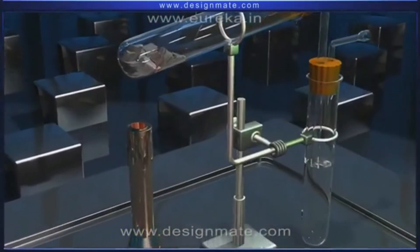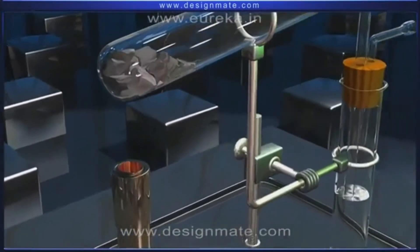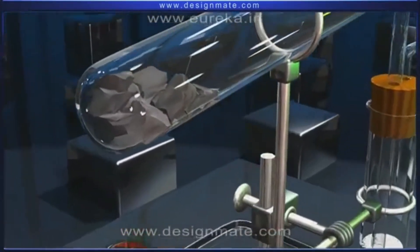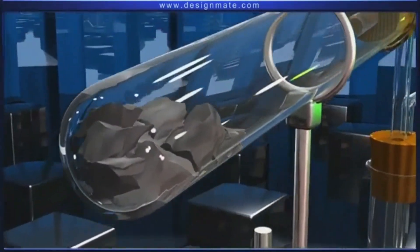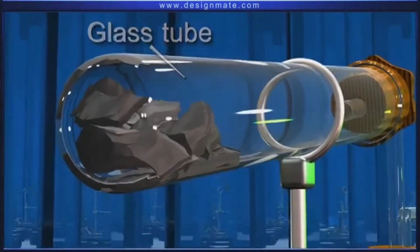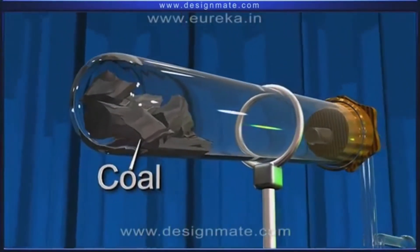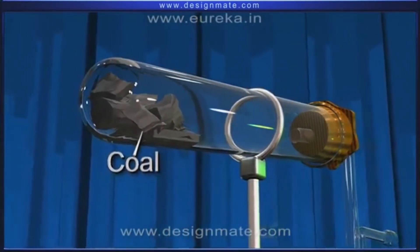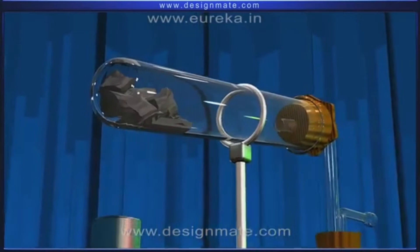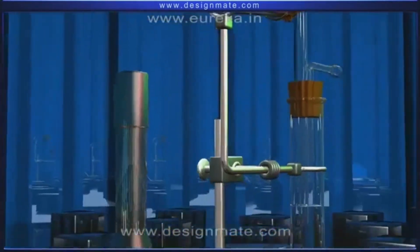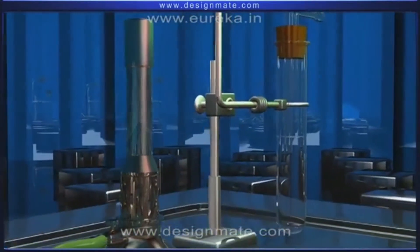First, arrange the apparatus as shown. The horizontal glass tube contains some small pieces of coal, while the vertical glass tube is filled with water.